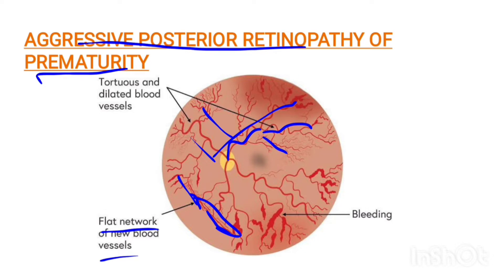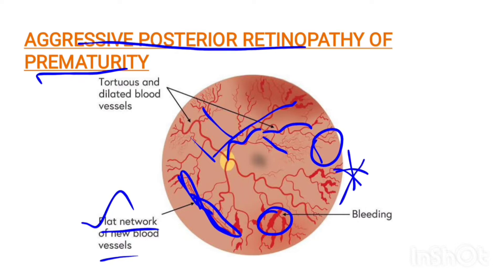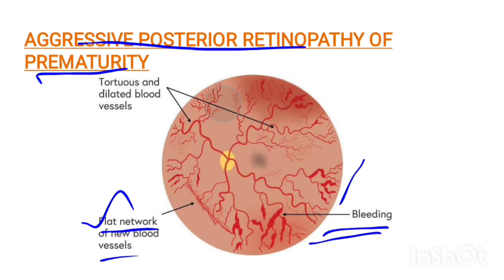There are vascular networks and loops formation. Important features include: network formation, loop formation, and bleeding hemorrhage. These are the main criteria for APROP. In the image of APROP you can see bleeding hemorrhage, networking, looping, as well as severe tortuosity and venous dilatation.